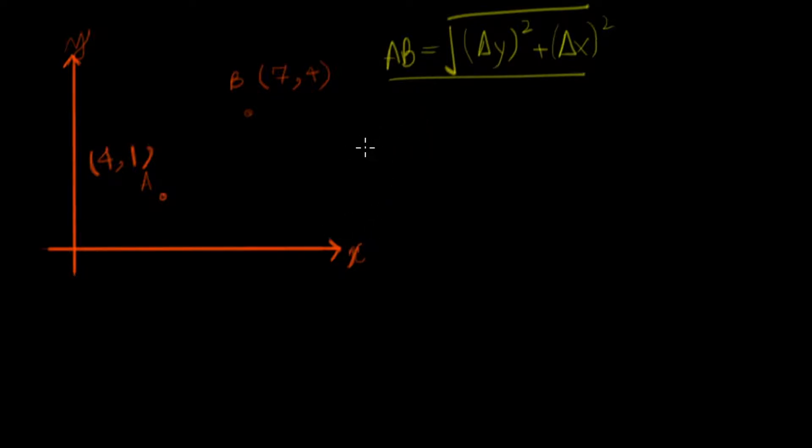Now let's take an example. Let us consider that point A is at (4,1) and point B at (7,4). By that I mean, going back to the basics, that for point A, which is right here, this distance is 4 and this height is 1. Similarly for point B, by the same description we followed.